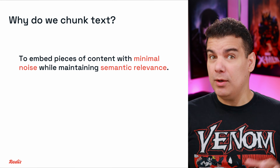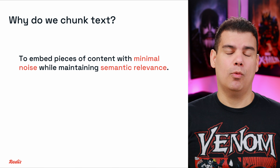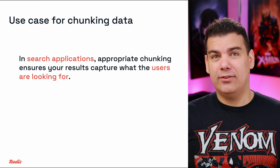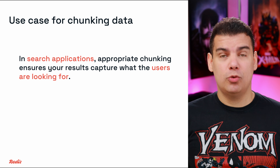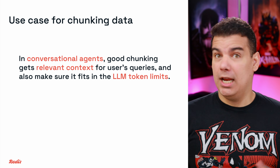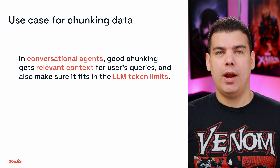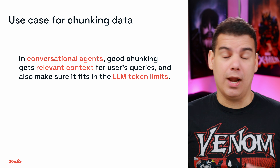What is chunking? Chunking is simply breaking down large pieces of text into smaller segments before embedding them and storing them into a vector database. The main reason is to ensure we're embedding pieces of context with minimal noise and maintaining semantic relevance. In semantic search applications, proper chunking ensures your search results accurately capture what users are looking for. In conversational agents, good chunking ensures the retrieved context applies to the user's query and fits within the token limitation of your LLM.